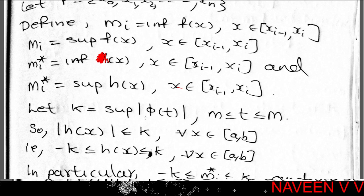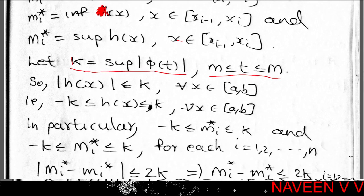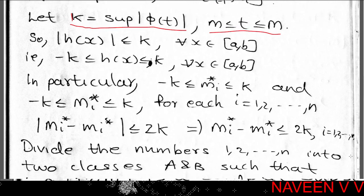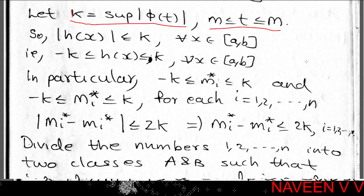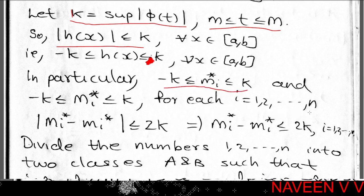Define k = supremum of |φ(t)| for m ≤ t ≤ M. Since h(x) = φ(f(x)) and f(x) lies in [m, M], we have |h(x)| ≤ k for all x in [a, b]. That is, −k ≤ h(x) ≤ k. In particular, −k ≤ m_i* ≤ k and −k ≤ M_i* ≤ k for each i = 1, 2, 3, ..., n.